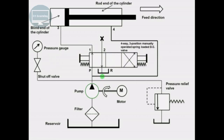When the spool of the four-way direction control valve is in the left envelope mode, fluid flows from the reservoir through the filter, to the pump, to port P, from P to port 1, from 1 to port 3, and enters into the blind end of the cylinder, causing the piston and piston rod to move in the forward direction.